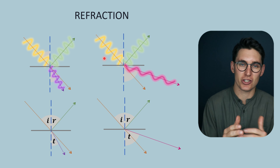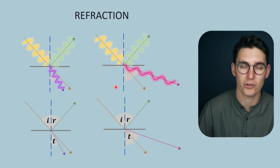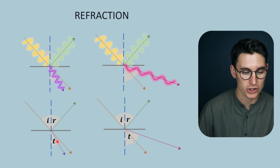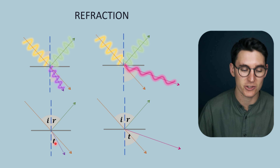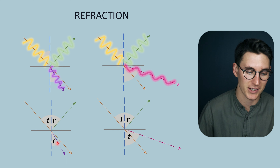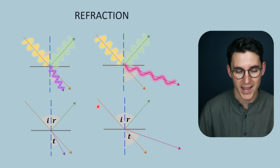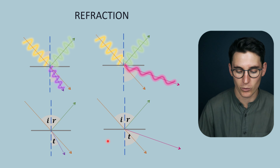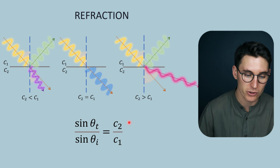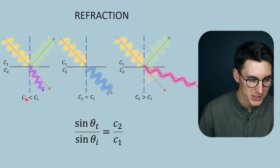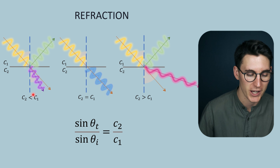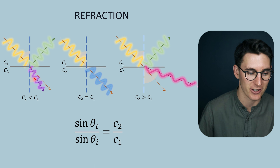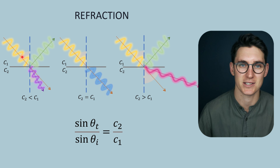The angle change is determined by the difference in the speed of sound from our first tissue to our second tissue. If the incident ultrasound pulse slows down as it enters the next tissue, we get a reduction in our transmittance angle. If it speeds up, we get an increase in the transmittance angle. When the speed of sound in the second tissue is slower, our transmittance angle is smaller than our incidence angle.